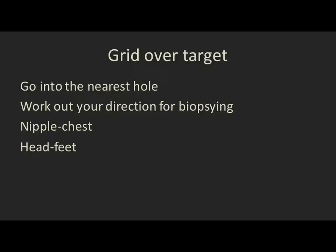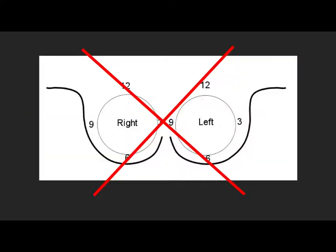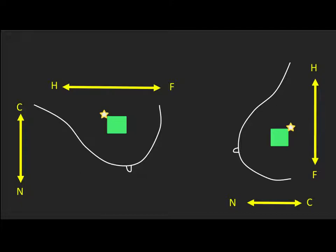It's important that you do this targeting in terms of nipple, chest, feet, or head — not clock faces. Clock faces are going to get you very confused, so don't use them. For example, if your lesion is shown here with yellow stars on the standard sagittal, and the nearest block you've decided to go into is shown in green, and you've decided on the top posterior corner, then you know you need to take your biopsies towards the chest and towards the head in this patient.